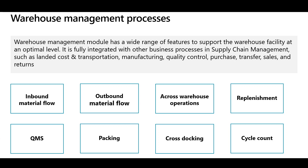We also have internal operations such as movement between locations, transfers across warehouses, and inventory adjustments in and out as required. Then there is the replenishment process, where you replenish or increase on-hand quantities at picking locations from bulk locations. We also have quality management (QMS) operations and packing operations, where items are packed before shipping to customers. In Dynamics 365 Supply Chain Management there are two kinds of packing: manual packing through a pack station, and a more automated approach called containerization. Finally, there are cross-docking and cycle count operations.